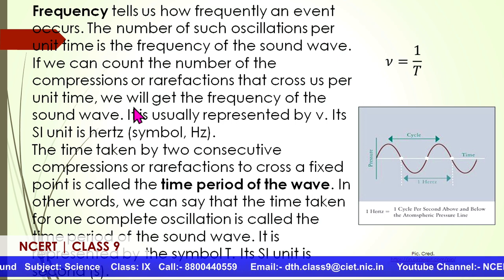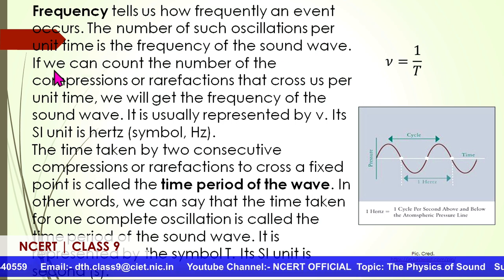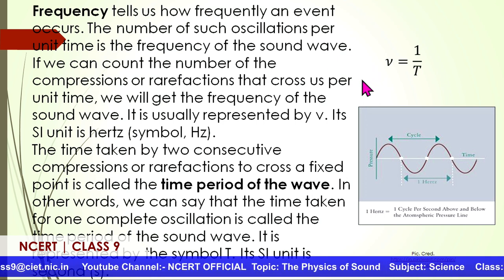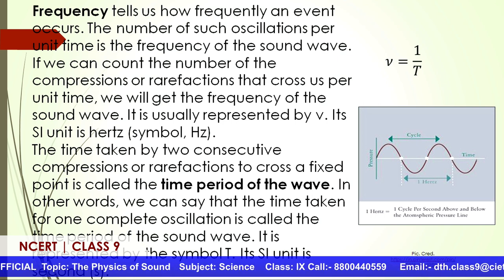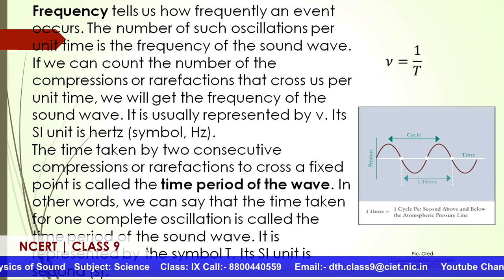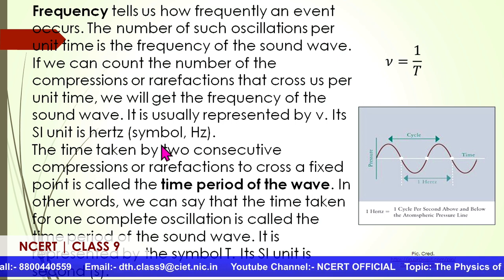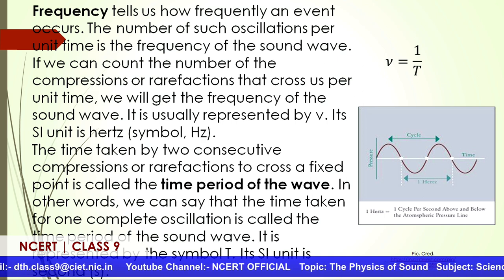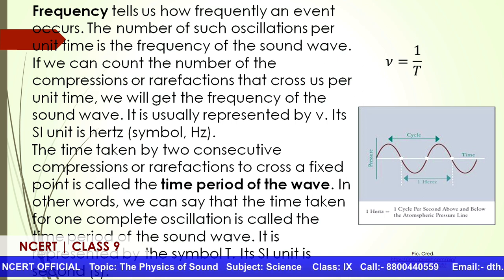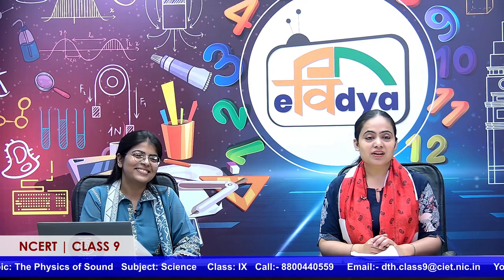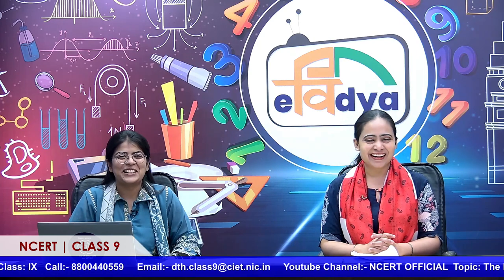What is frequency? It tells us how frequently an event occurs. The number of oscillations per unit time is the frequency of the sound wave. If we count the number of compressions or rarefactions crossing a fixed point per unit time, we get the frequency. Think of a piano — each key has a different sound because it has a different frequency. The unit of frequency is Hertz — inverse of time period, per second. Even the radio frequency students hear about is in megahertz — that is the same concept.